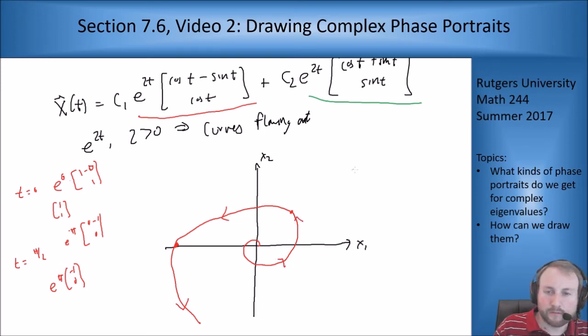Now the green curve at t equals 0. This is at e to the 0 times [1, 0], so this is at (1, 0). And at t equals pi over 2, we're at e to the pi times (1, 1). So we start at (1, 0), which will be somewhere like here.